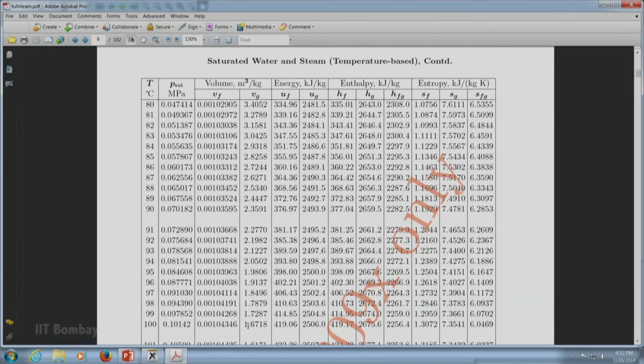And corresponding to this now, we can get all the properties related to VF, VG, UF, UG, HF, HG, and SF, SG. Please note down all these values, then we can come back to solution again. The properties at state 1 and state 2 can be read from the steam table and I will write down those values.